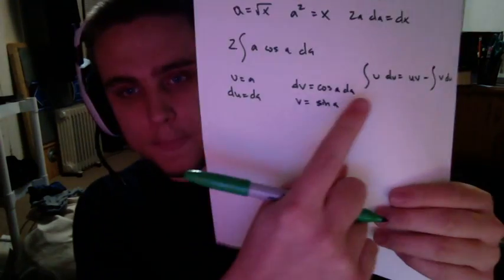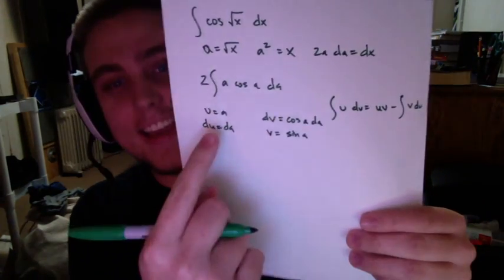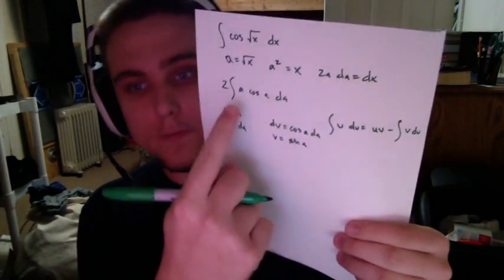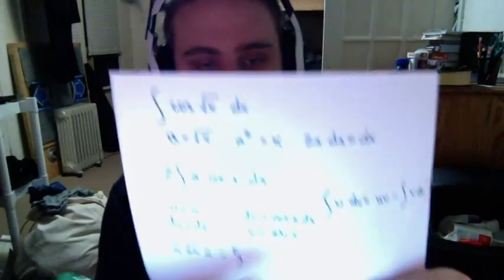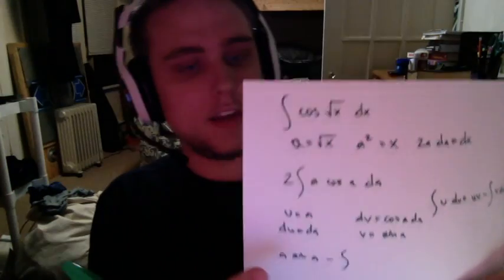Awesome. So now we've got u equals a and v equals sine a. The first thing we need is uv, which is just a sine a. So we have a sine a minus the integral of v du. Now v is sine a and du is da, so we have the integral of sine a da. That sounds really simple — we've done that before in Calc 1. The integral of sine a is negative cosine a, so this comes out to a sine a plus cosine a.